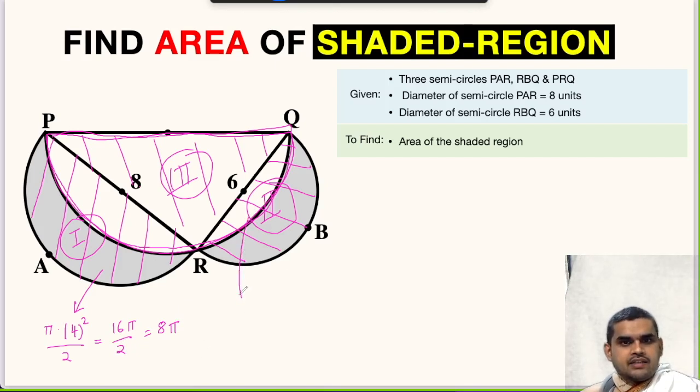Similarly, let us find the area of the second semicircle. It will be π times 3² divided by 2. This is 9π upon 2, which we can write as 4.5π square units.